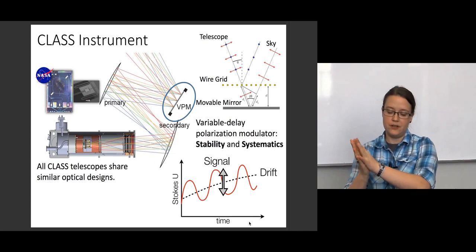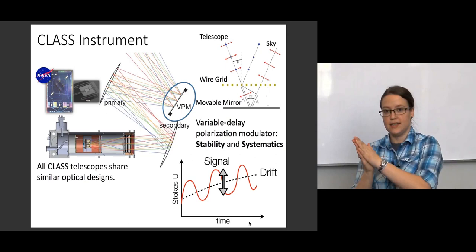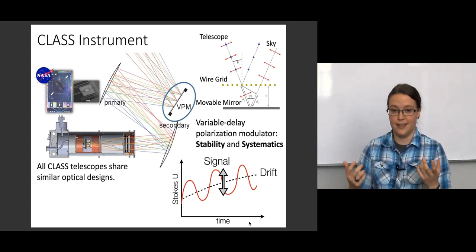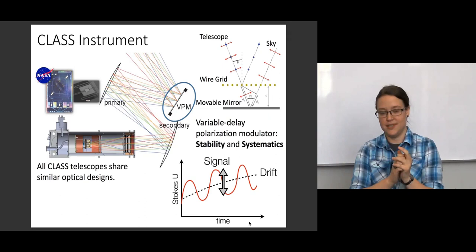And we take this VPM, and we stick it up as the very first optical instrument of our telescope. This means that the VPM encodes a modulated signal at the very beginning of the optical chain. And this is really great because mirrors, lenses, filters, all of these things have a property called instrument polarization, where they take unpolarized signal coming in, and then polarized signal comes out.